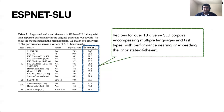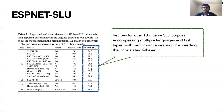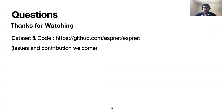In the given slide, we show the supported tasks and datasets in ESPNet SLU, along with their reported performance in the original paper and our toolkit. ESPNet SLU contains recipes for over 10 diverse spoken language understanding corpora, encompassing multiple languages and multiple task types, with performance nearing or exceeding the prior state of the art. We release an open-source toolkit and provide access to our trained models with the objective of facilitating fast research and development of SLU systems through standardized recipes for various benchmarks. Thanks a lot for watching — we look forward to hearing your questions in the poster session.